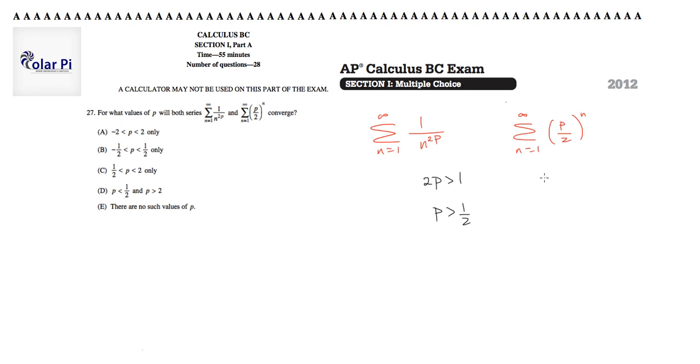And we know that the geometric series, which is n equals 1 to infinity, x to the n, converges whenever the absolute value of x is less than 1. We reckon that this particular geometric series is going to converge when the absolute value of p over 2 is less than 1. That is going to say when the absolute value of p is less than 2. That is to say when negative 2 is less than p is less than 2.